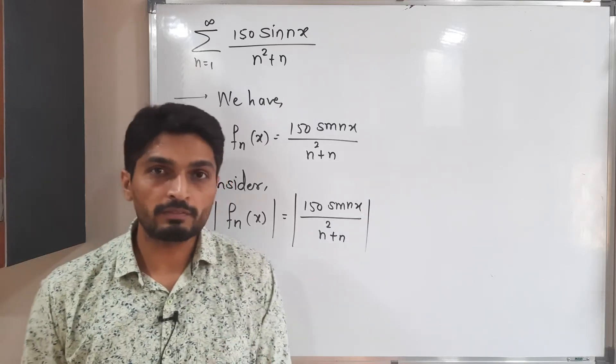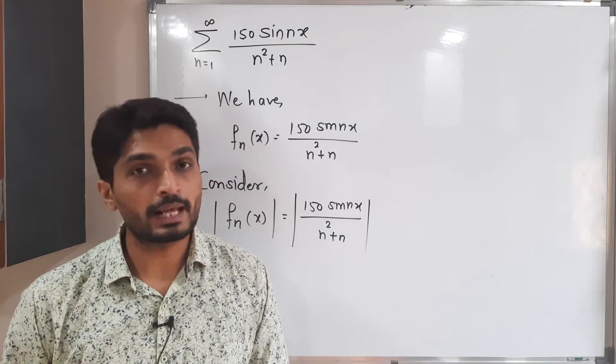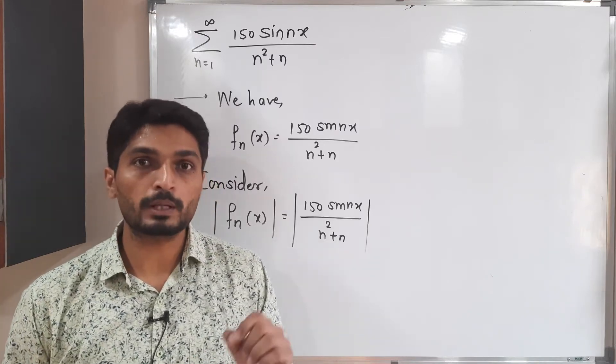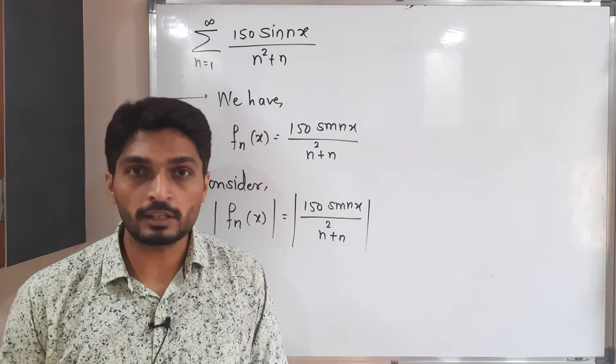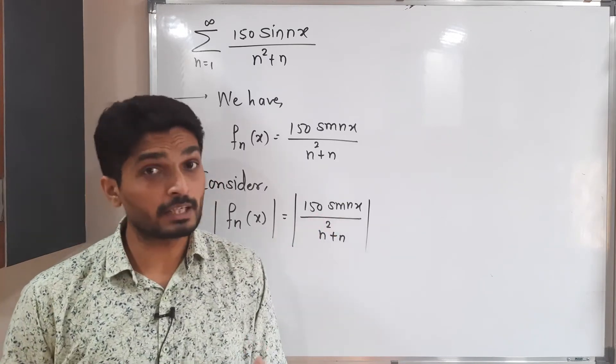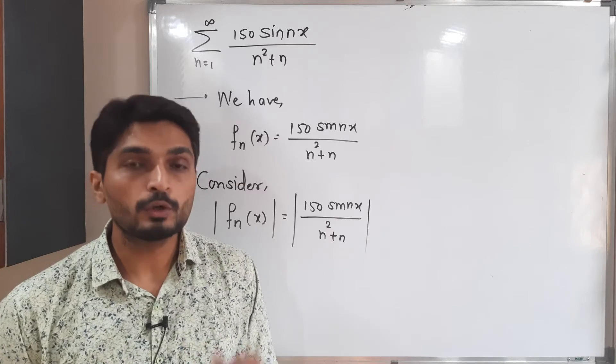As you know, 150 is a positive real number, so it has no need of mod. As well as in the denominator, we have n square plus n where n is a natural number, so they cannot be negative. Only this sine term can be negative, so that's why we will apply mod to only that term.